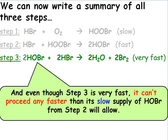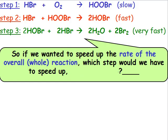And even though step 3 is very fast, it can't proceed any faster than its slow supply of HOBr from step 2 will allow. So if we wanted to speed up the rate of the overall reaction, which step would we have to speed up?